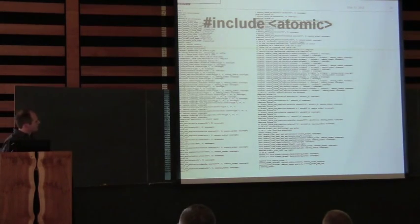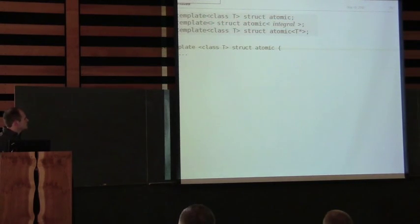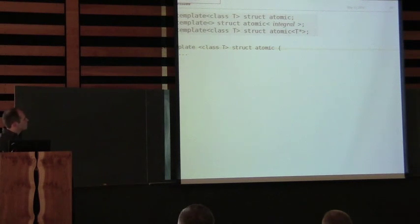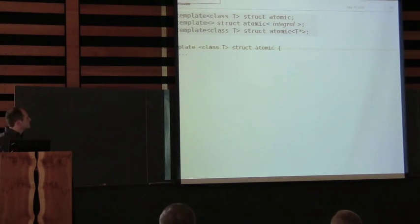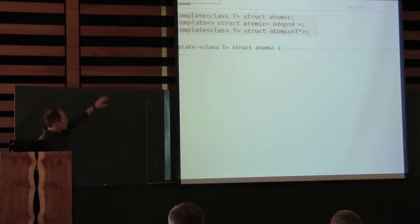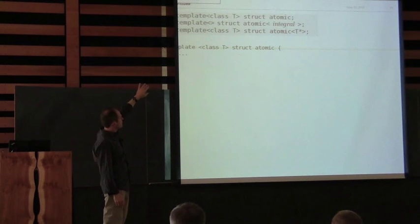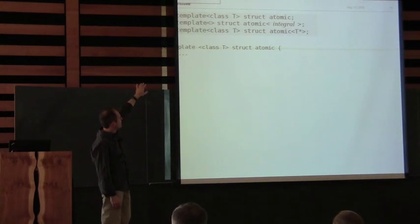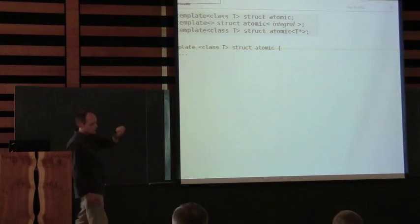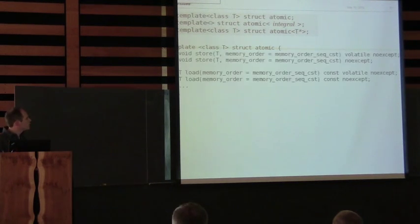That is actually all of atomic, at least by the spec — it doesn't have any of the details in it. This is sort of a tutorial. Let's take a look at what the atomic class is. Atomic is a template that takes a T. The template is specialized in three ways: you've got the generic one at the top, a specialization for integral types, and a specialization for pointers.